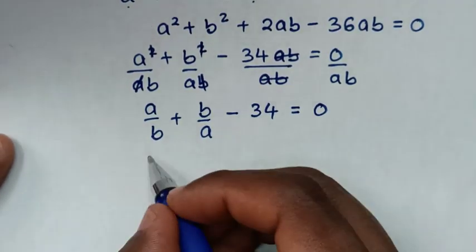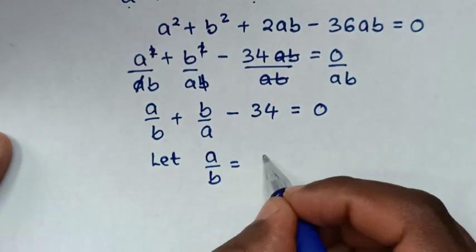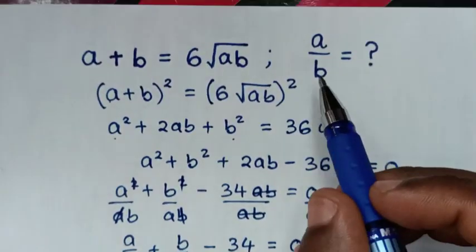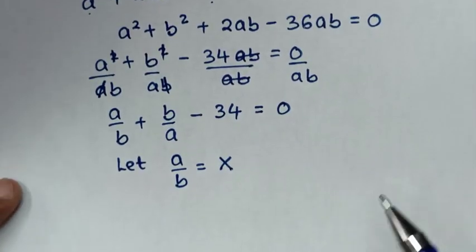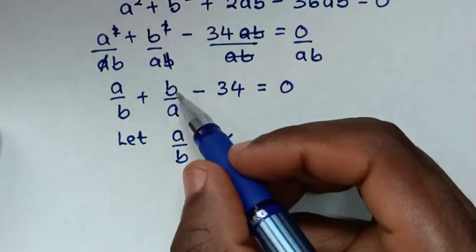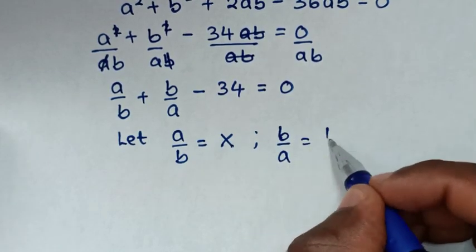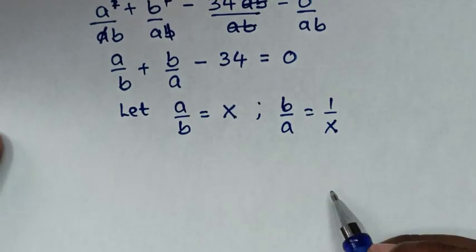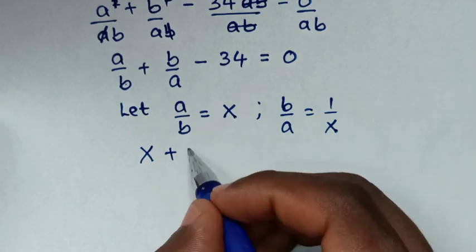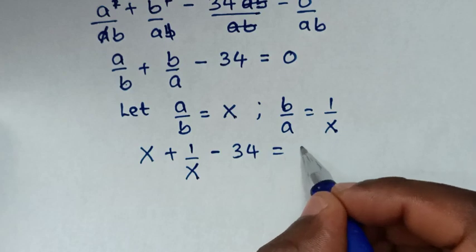Then in the next step, we let a over b equal to x. We are going to find the value of a over b, so first we'll find the value of x. Then b over a will be equal to 1 over x. So our equation will be x plus 1 over x minus 34 is equal to 0.